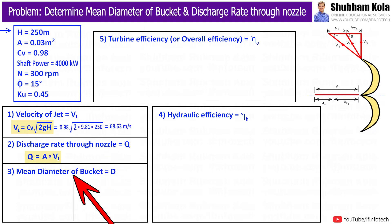Now, with the help of these calculated values of velocity of jet V1, we will calculate discharge rate through nozzle, i.e. capital Q, because discharge equal to area into velocity of jet, where nozzle area capital A is provided in given data. So, this will give me the value of discharge rate through nozzle as 2.059 m³ per second.